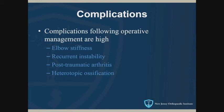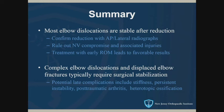Overall: most elbow dislocations are stable after reduction. Confirm reduction with AP and lateral radiographs and assess neurovascular status. Don't immobilize these patients too long — patients who show up two weeks after dislocation still in a splint don't do as well. Make sure they see somebody within a week to be evaluated and get moving with therapy. Complex elbow dislocations and displaced fractures typically require surgery. Potential complications include stiffness, persistent instability, post-traumatic arthritis, and heterotopic bone formation.